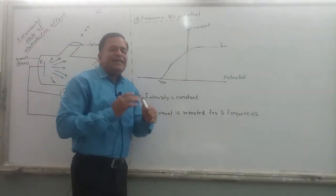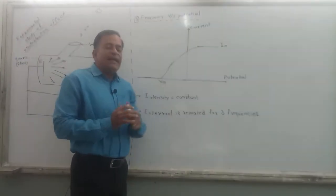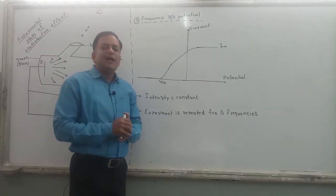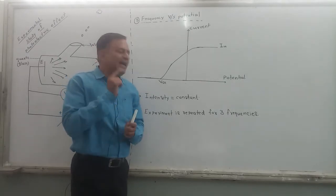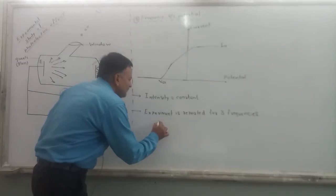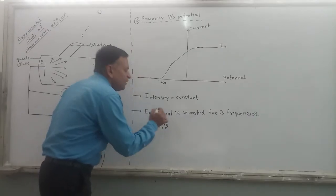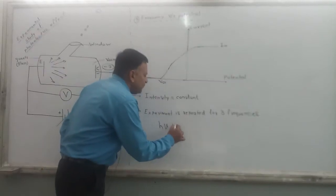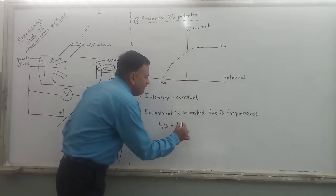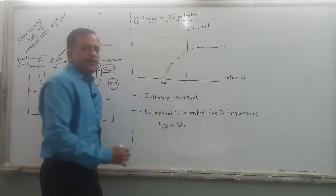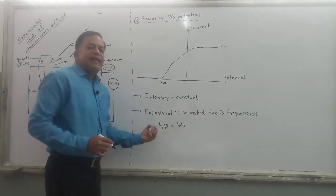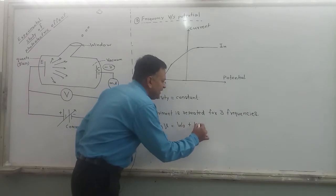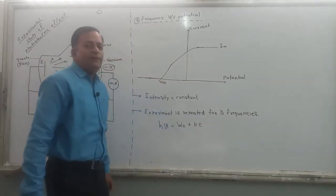Before I start explaining this graph, keep Einstein's photoelectric equation in mind — it will be easy to understand. The equation is: H nu, that means the total energy of the photon, is divided into two parts. The first part is equal to the work function, which is the energy required to kick an electron out of the metal surface, plus the remaining energy becomes the kinetic energy of the electron.